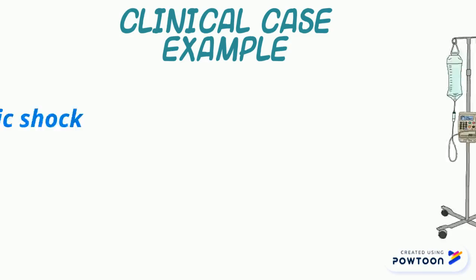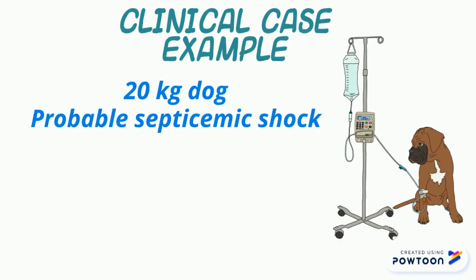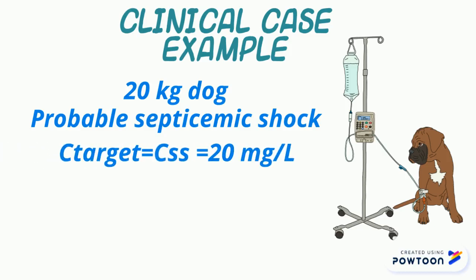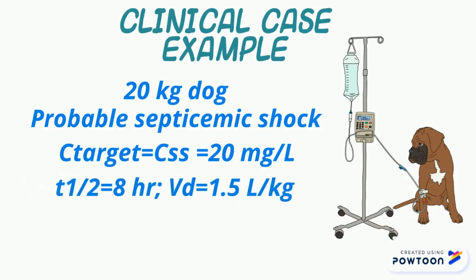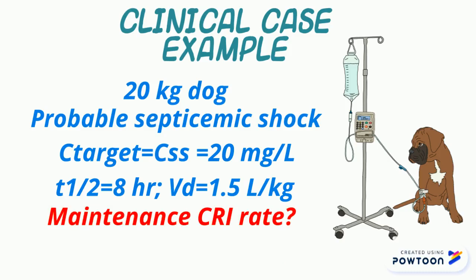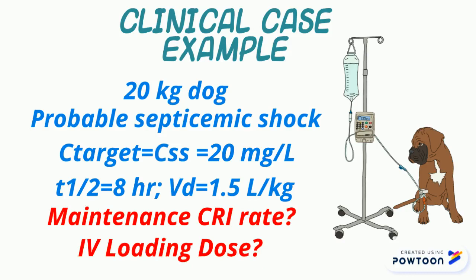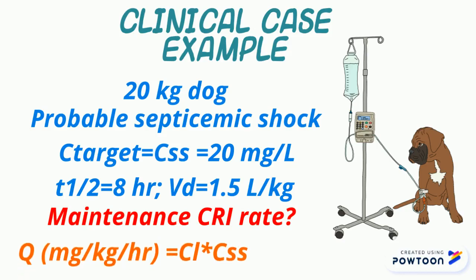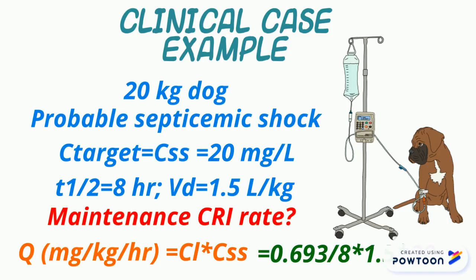Let's put this into practice. Assume you are presented with a 20 kg dog with probable septic shock associated with a parvoviral infection, indicated by bloody diarrhea. The antibiotic you want to administer works at a therapeutic concentration of 20 mg/L in plasma. The pharmacokinetic parameters show a half-life of eight hours and a volume of distribution of 1.5 L/kg. The two questions are: what is the infusion rate in mg/hour for the maintenance CRI, and what is the loading dose for the IV bolus? First, calculate clearance by multiplying the elimination constant by the volume of distribution, then multiply clearance by the desired concentration of 20 mg/L to get a dosage rate of 2.6 mg/kg/hour.